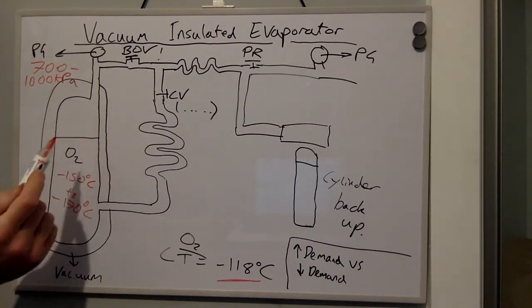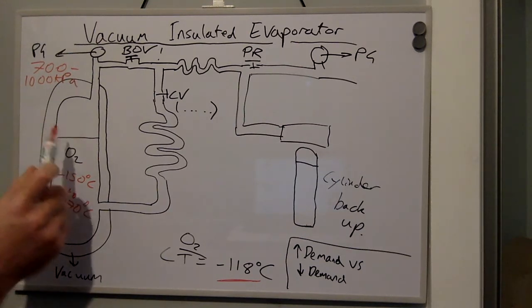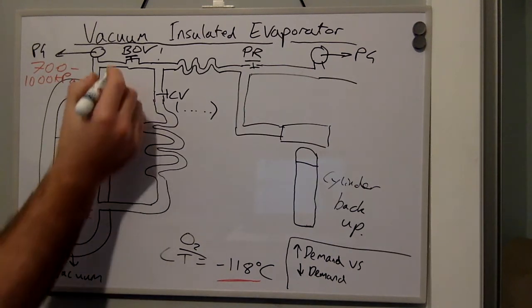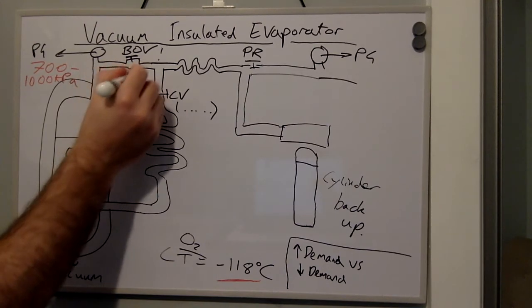If the ambient temperature is high or there is low oxygen demand, the pressure in the tank will increase. Therefore, we have a blow off valve which is activated at 1500 kPa.